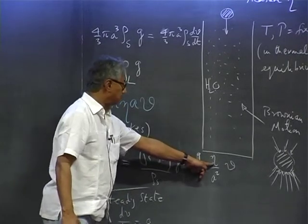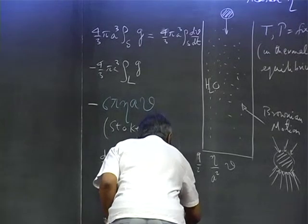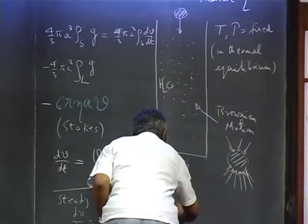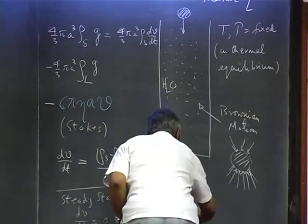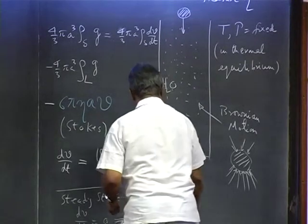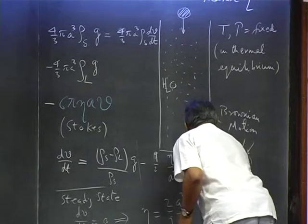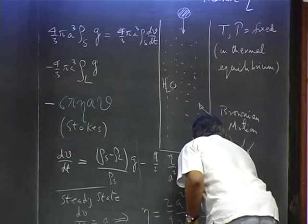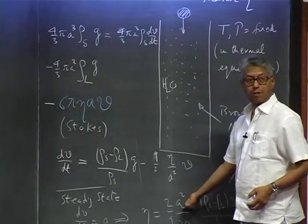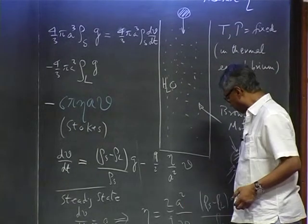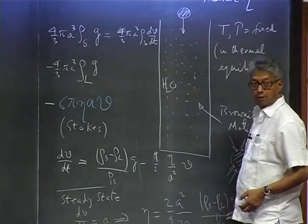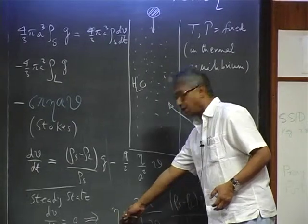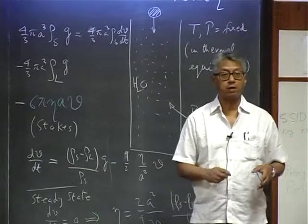Our experiment was such that as the ball goes down and when it enters a steady state, dv/dt is zero. You have an equation relating the viscosity to (2a²/9) times the steady-state velocity times (ρ_s − ρ_l)g divided by ρ_s. We would measure the diameter of the ball by a slide caliper, use the known densities, and measure the steady-state velocity from which we calculate the viscosity.